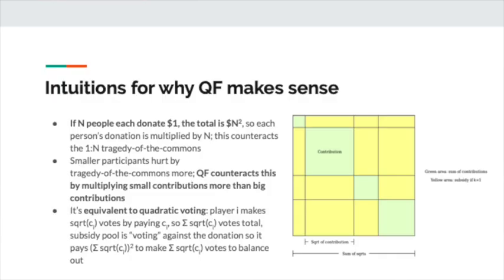Some intuitions for why quadratic funding makes sense. If N people each donate one dollar, the total size of the square is going to be N squared. So each individual person's donation gets multiplied by N. N people each donate one dollar, so there's N dollars of raw donations — quadratic funding gives you N squared, so all donations get multiplied by N. If N people are donating, there's a one-to-N tragedy of the commons: you're paying the full cost of your donation but only getting one over N of the benefit. Here we multiply by N, so basically we subsidize you N-to-one, and so the cost and the benefit both balance out.